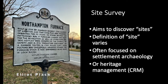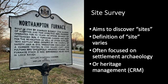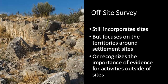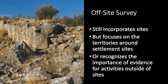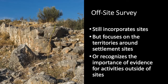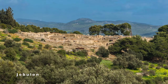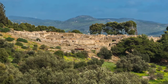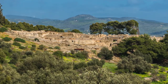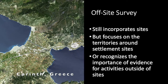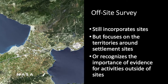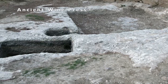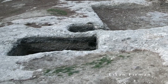In cultural resource management, legislation often requires us to think of surveys in terms of sites. However, not all archaeological surveys focus on sites. Some archaeologists, while recognizing the importance of settlement sites, are more interested in surveying the territories around those settlements. This kind of survey is often called off-site survey, and can involve searching for evidence of those practices that took place in the rural areas around those settlements.